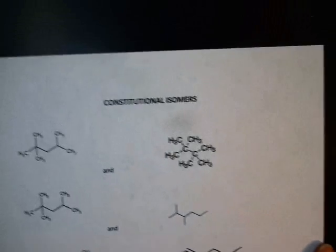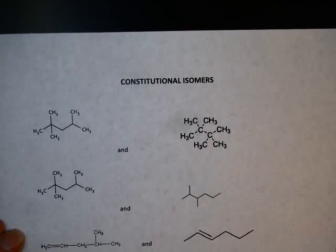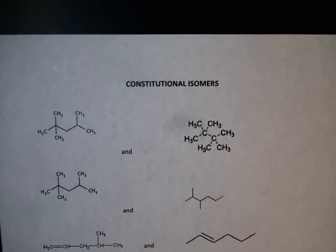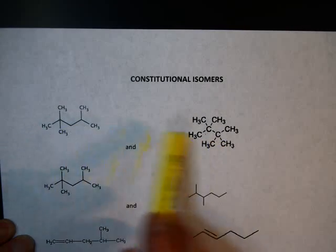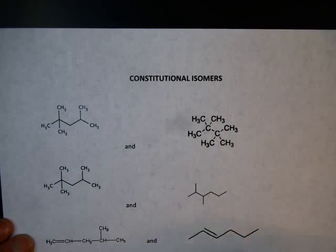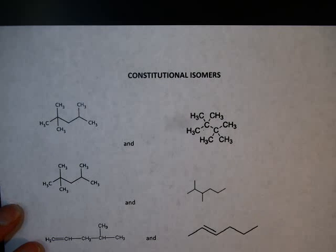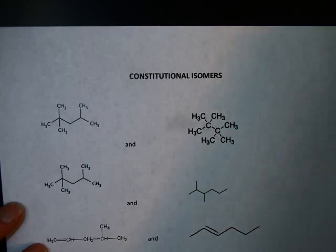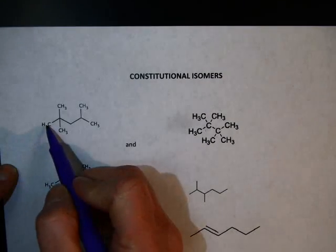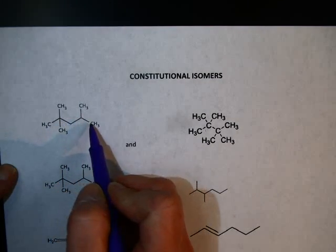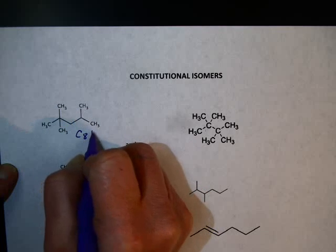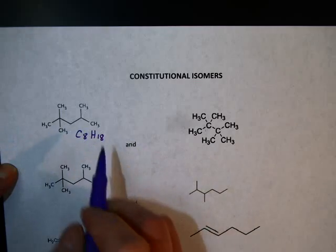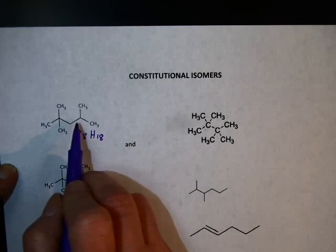Here are several examples. Each time, we'll first be sure that the compounds have the same formula — if they don't have the same formula, they're not isomers at all. Counting the carbons we get 8, and we know there are 18 hydrogens, no rings, no double bonds — so C8H18.